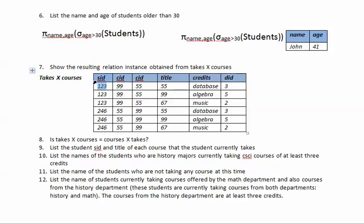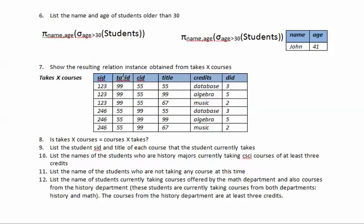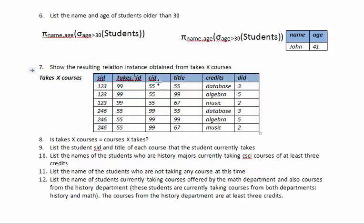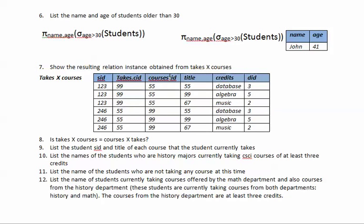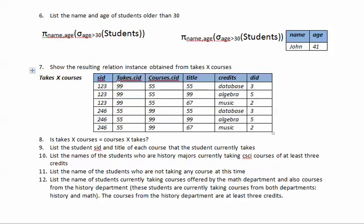Also note that both 'takes' and 'courses' have an attribute named CID. To distinguish them, we use fully qualified names: takes.CID and courses.CID. We don't need the full name for title, credits, SID, etc. So the answer to number eight is no.